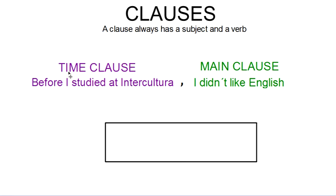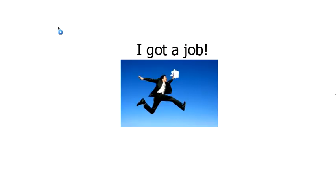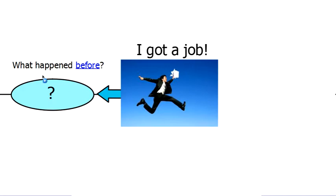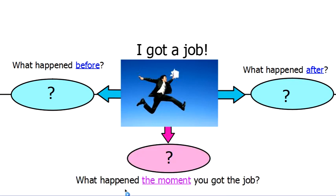So we're going to look at time clauses and main clauses today. With this idea, I was looking for work in the newspaper, many different places — maybe the internet, maybe my friends — and I got a job. I want to think: what happened before I got a job? What are the things that happened before in my life? Or maybe what are things that happened after I got a job? Or what are some things that happened the exact moment that you got the job, or the time around that you got the job? We're going to look at these different ideas today.